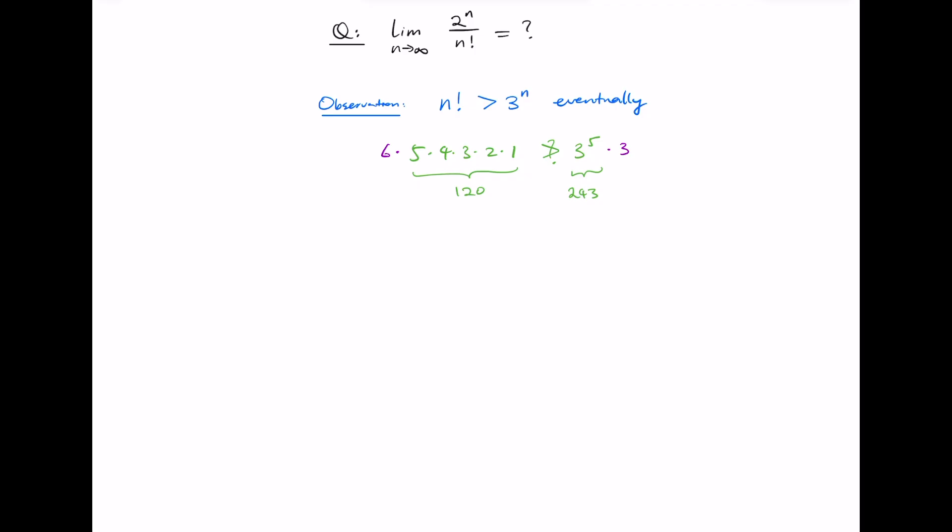And we can continue this process, so we multiply here by 7, multiply here by 3, multiply by 8, multiply by 3. So we can see that as n gets larger, the left hand side is growing at least twice as fast as the right hand side.